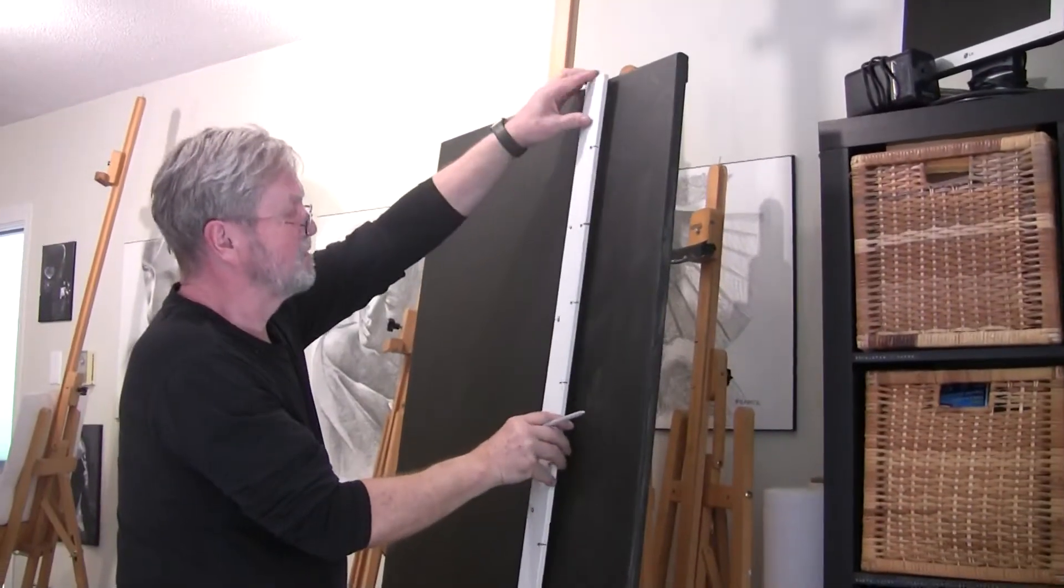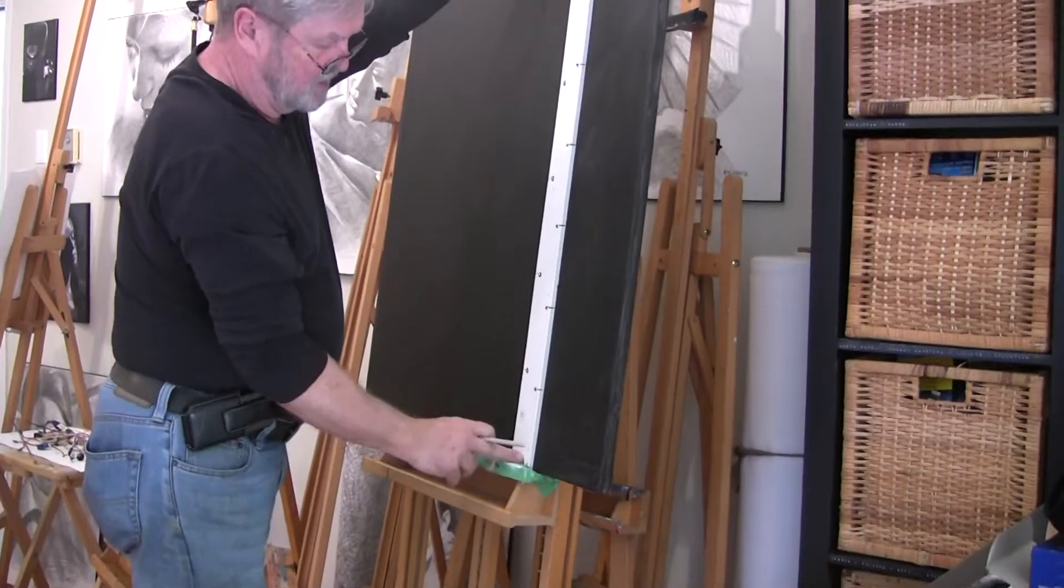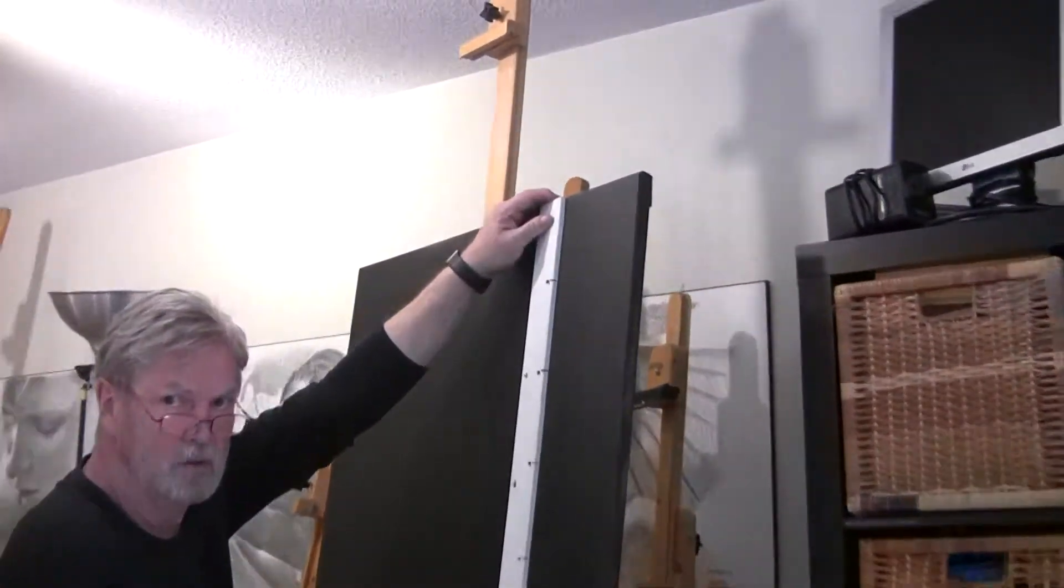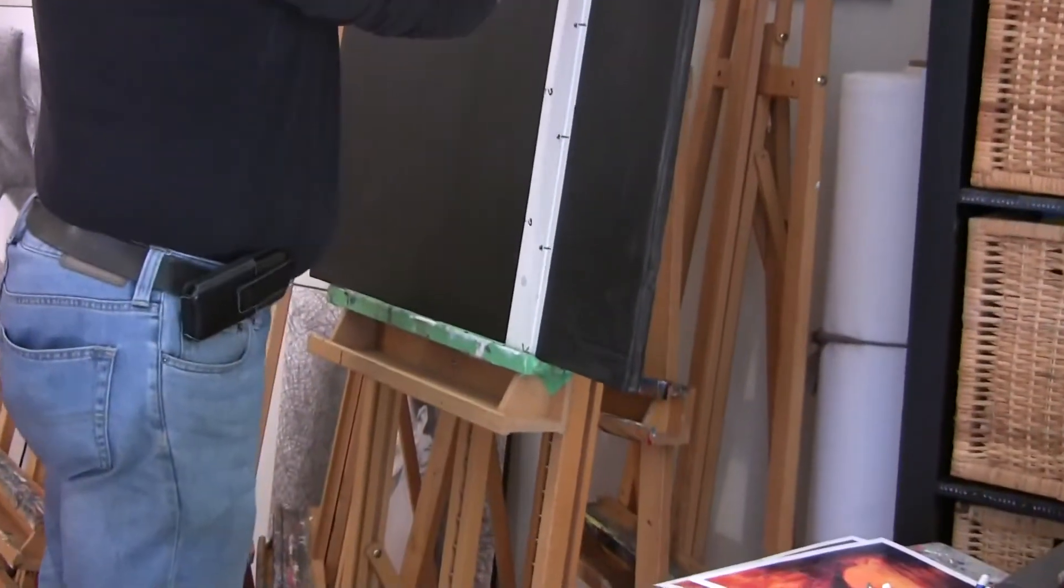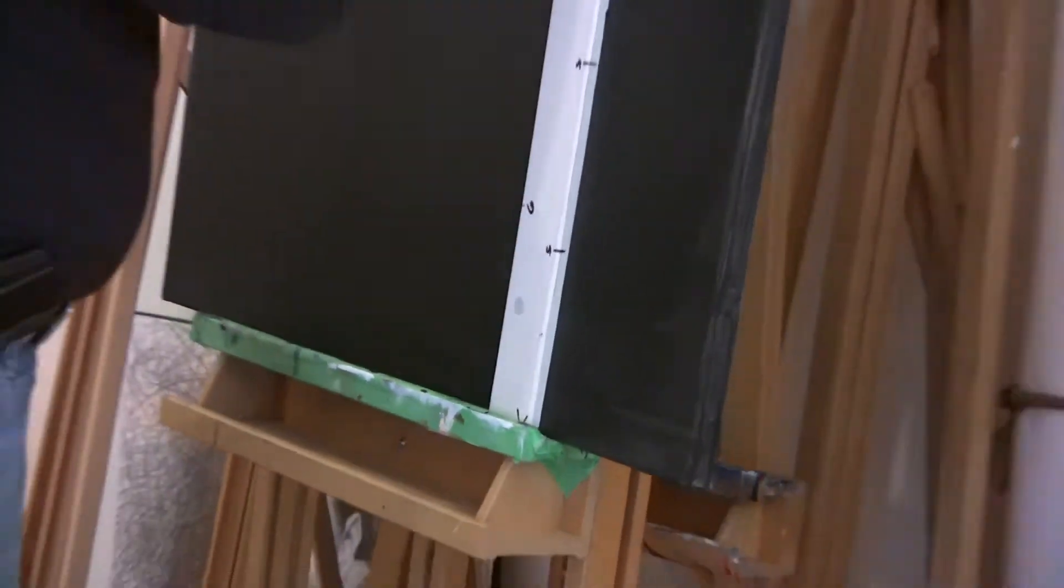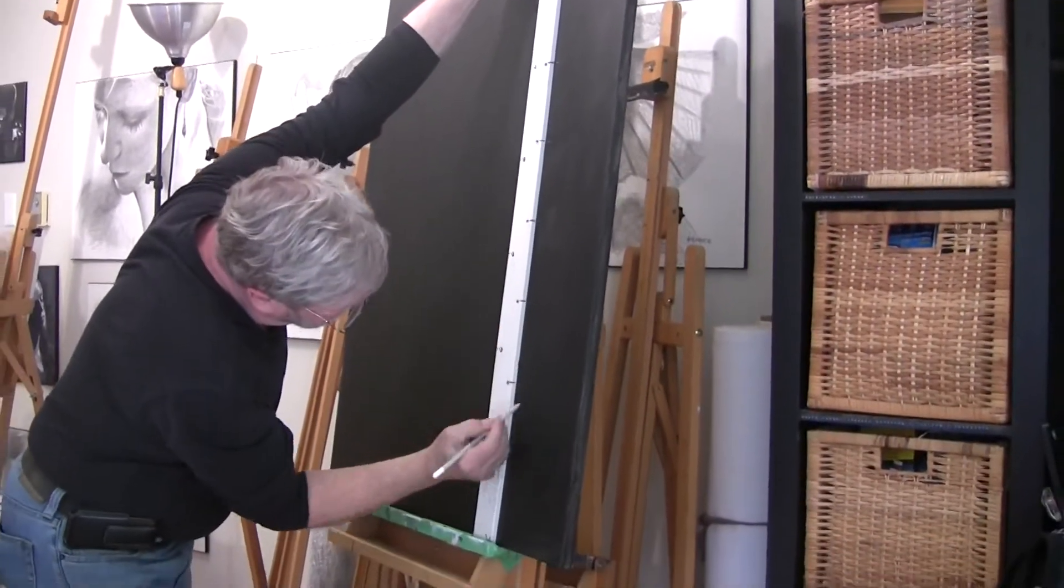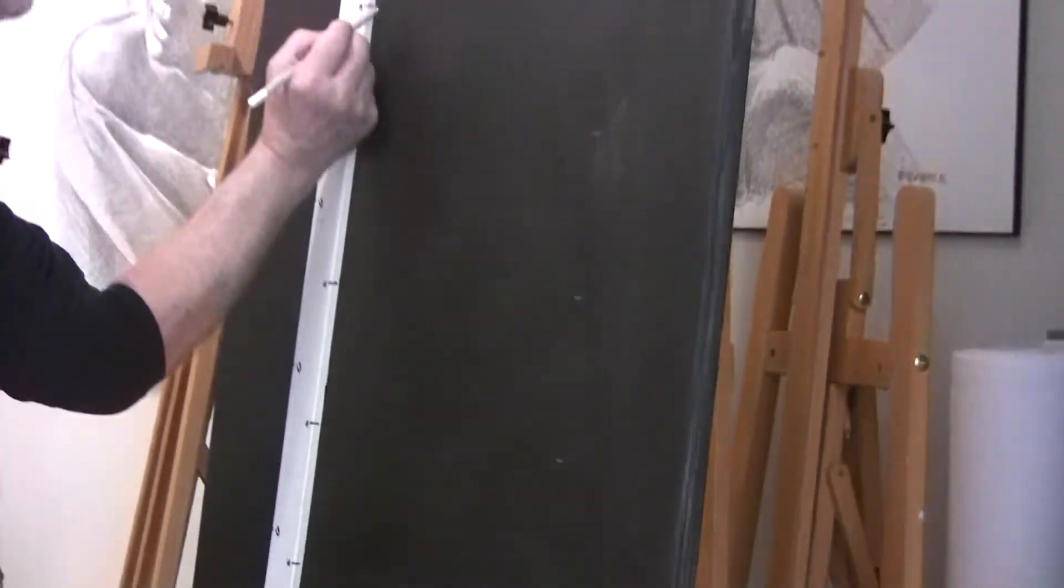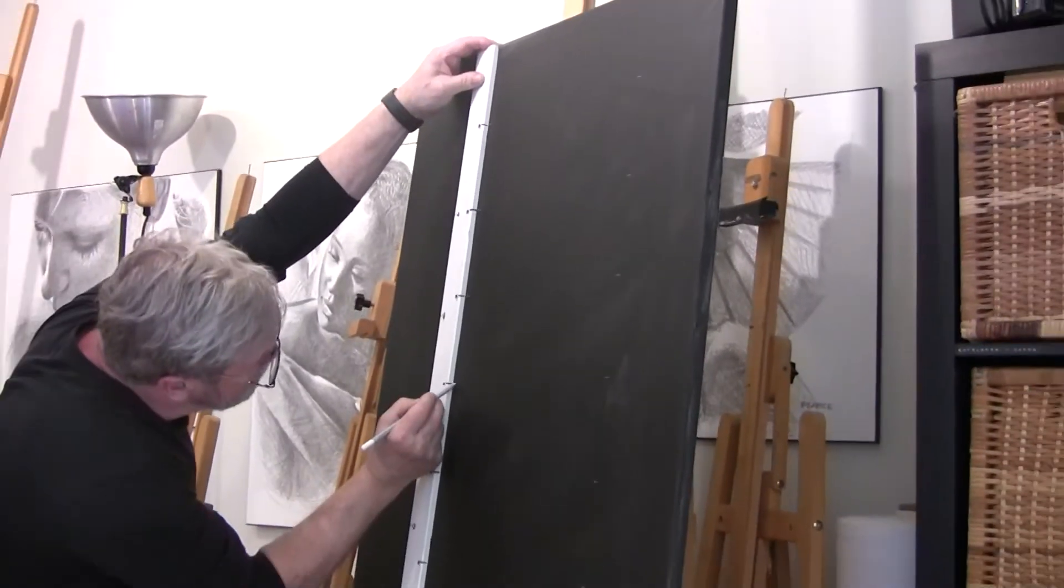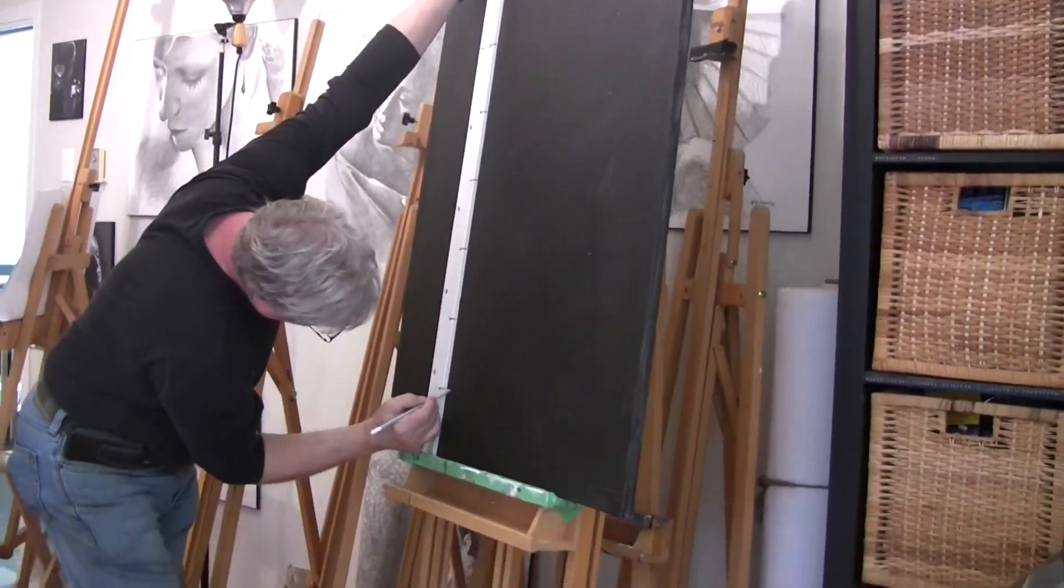Now the simplest thing to do is set the board on the bottom of the easel so it's supported, and just quickly mark off your five inch marks. Another trick of the trade is to make sure that you're looking at it as straight on as possible. So as you mark all the way down, move your head down so you're lining up. Otherwise your marks will go askew.